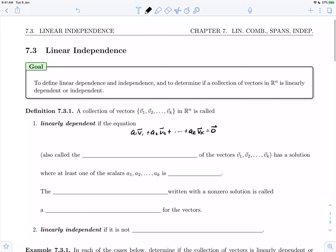This equation is also called the dependence equation for the vectors v1 through vk. If this equation has a solution where at least one of the scalars a1 through ak is non-zero, the dependence equation written with one of these non-zero solutions is called a dependence relation.